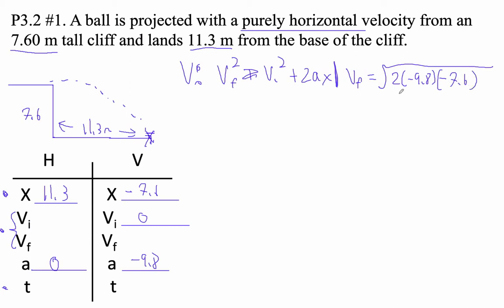It's 2 times negative 9.8 times negative 7.6. We could do this. Square root of 2 times negative 9.8 times negative 7.6. And it's 12.205, roughly.